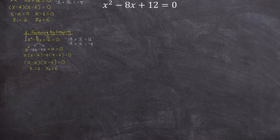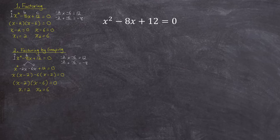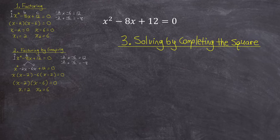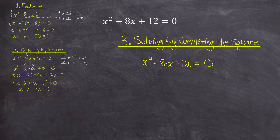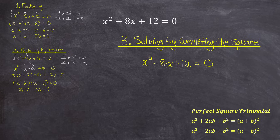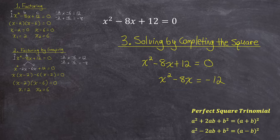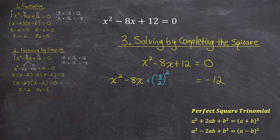Let's move on to our third method: solving by completing the square. This is a necessary method to know because not all quadratic equations can easily be solved by factoring. I'll start by rewriting the equation. Because we have two variable terms, one with an exponent of 2 and one with an exponent of 1, there's no easy way to isolate x — unless we create a perfect square trinomial. To do that, I'll move the constant term to the right, and then on the left side I'll create a perfect square trinomial by adding a term, which is always half of the coefficient of x, squared.